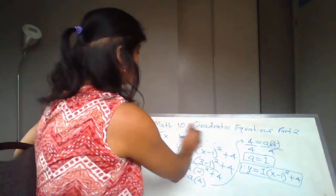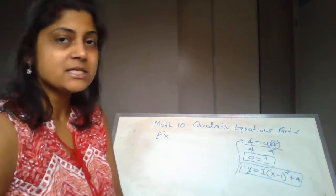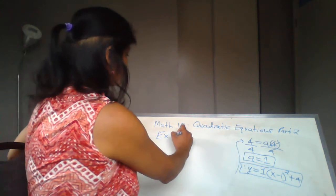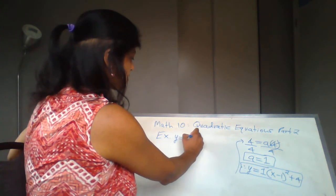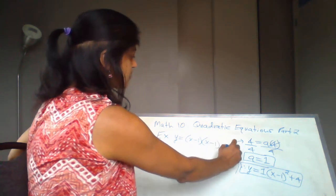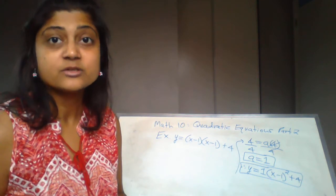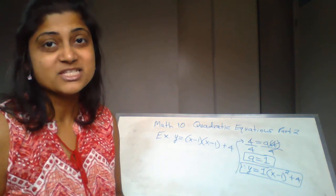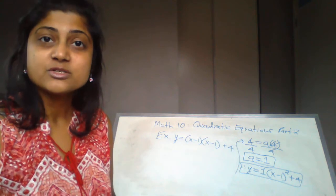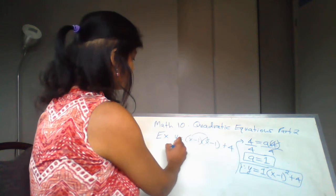Now the question also asks to change this from vertex form into standard form. When you see (x - 1) whole squared, you're just writing (x - 1) two times. So y = (x - 1)(x - 1) + 4. When the value of a equals 1, this is neither a vertical stretch nor a vertical compression.